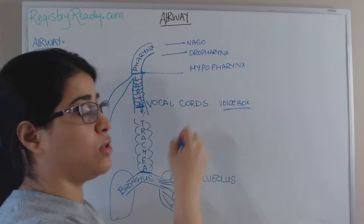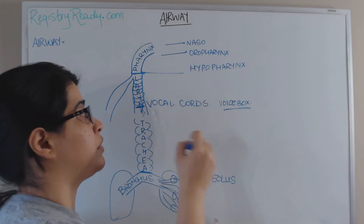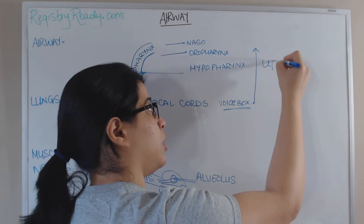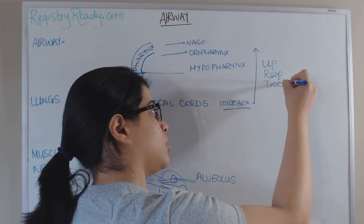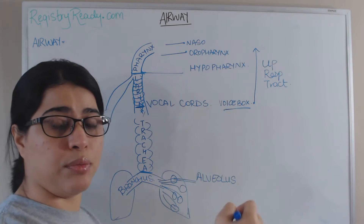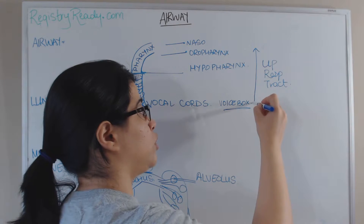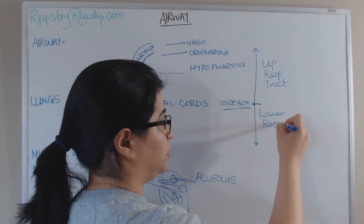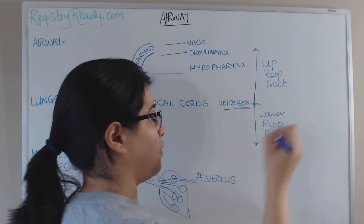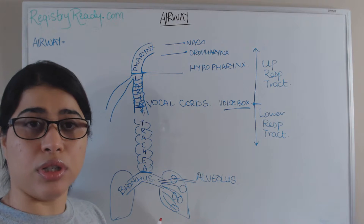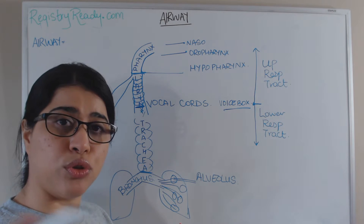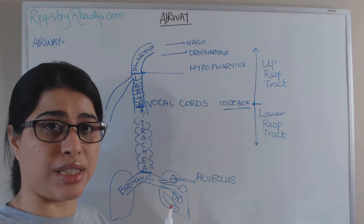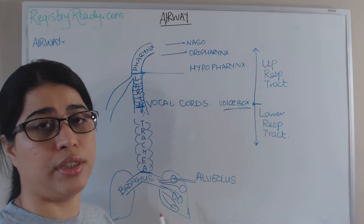The vocal cords are present at the base of the larynx, just above the trachea. All structures above the vocal cords constitute the upper respiratory tract: the nose, the nasal passages, the pharynx, and the larynx. All structures below the vocal cords form the lower respiratory tract: the trachea, the bronchus, and the bronchioles — further branches of the bronchus. The final unit of the lungs where gas exchange takes place, the alveolus, is also part of the lower respiratory tract.